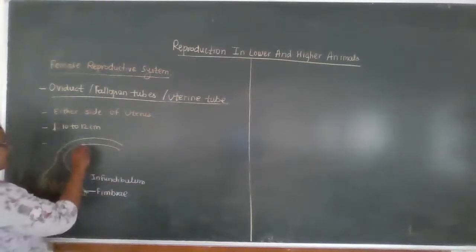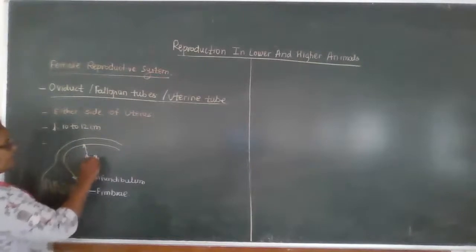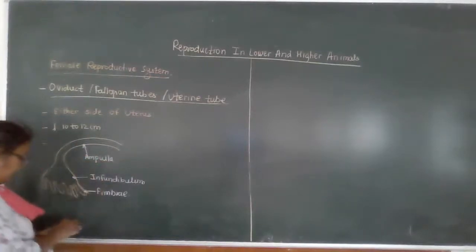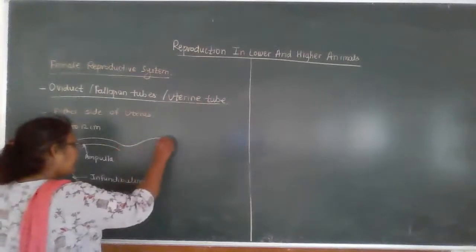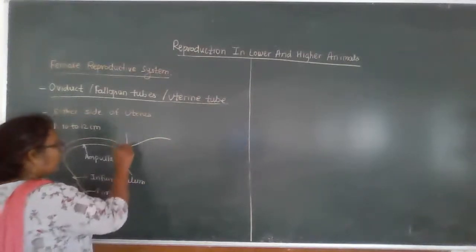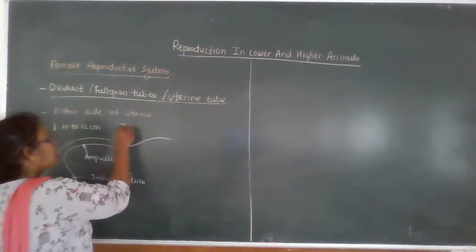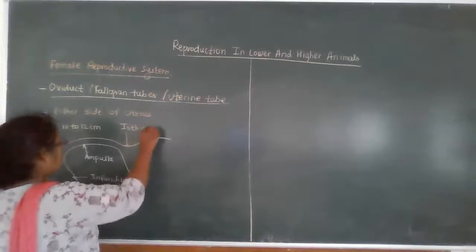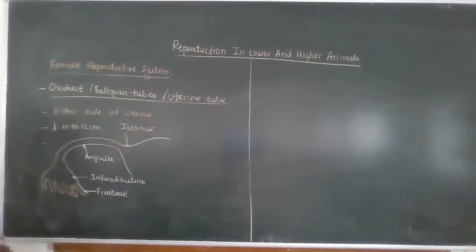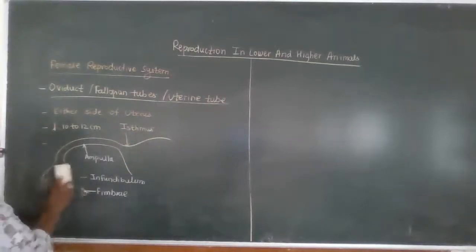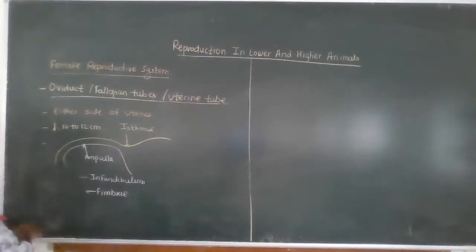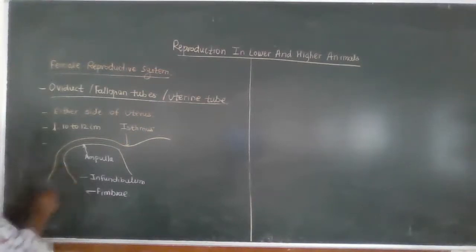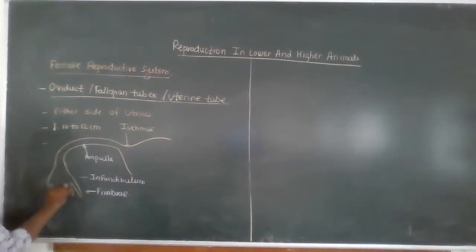This region is called the ampulla. And the point where the fallopian tube ends and the uterus starts is called the isthmus. The funnel-shaped structure with fimbriae has finger-like projections — these are the fimbriae.